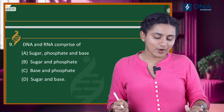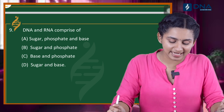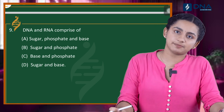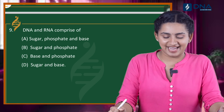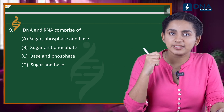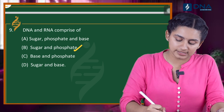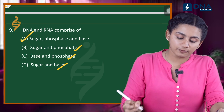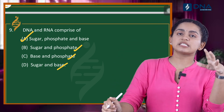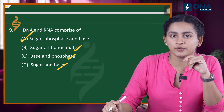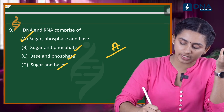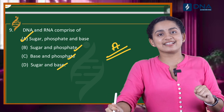Question 9: DNA and RNA comprise of what? DNA and RNA are made of a sugar, a phosphate group, and a nitrogenous base. The options include various combinations of sugar, phosphate, and base. The correct answer is Option A: sugar, phosphate, and base.